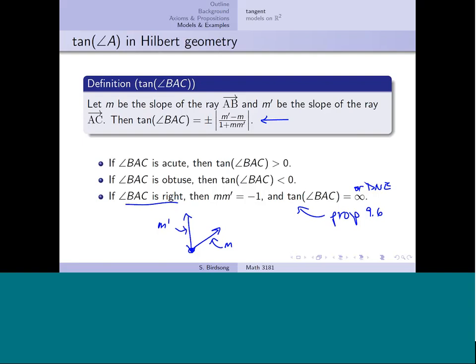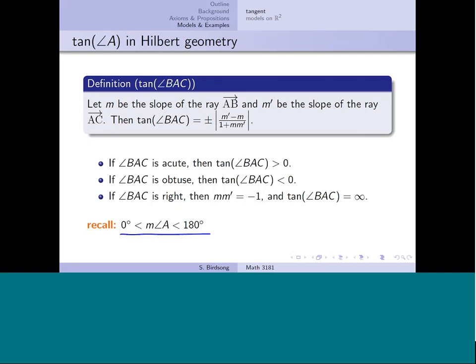For the models we've been working with in R2, all of this tangent machinery corresponds exactly to simply looking at the degree measure of the angle — as if you put a protractor on your picture. Angles are strictly between 0 and 180 degrees; 0 degrees is just a ray and 180 degrees is just a line. So visually you can often just read off angle types directly.